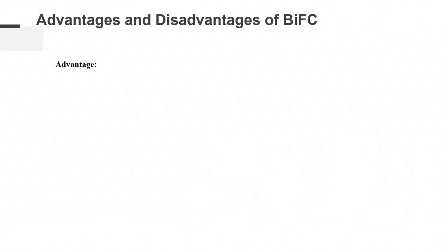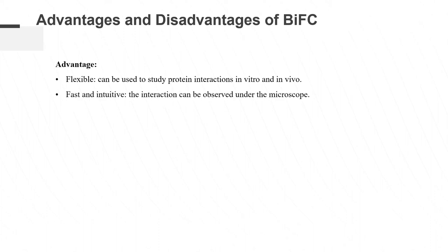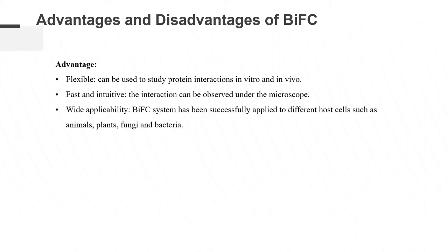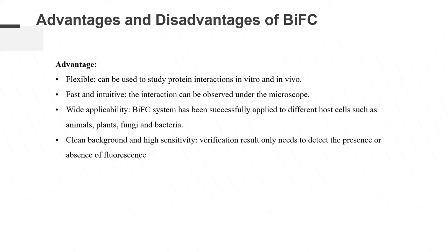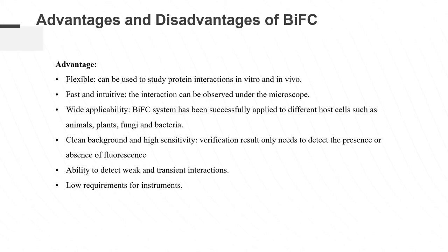Advantages of Bimolecular Fluorescent Complementary Technology: It is flexible and can be used for in vivo and in vitro interaction studies. It is fast and intuitive — the interaction results can be directly observed under the microscope. It has wide applicability and has been successfully applied to different host cells such as animals, plants, fungi, and bacteria. It has a clean background and high sensitivity — the verification results only need to detect the presence or absence of fluorescence. It can detect weak and transient interactions, has low instrument requirements, controllable cost, and relatively simple data processing.